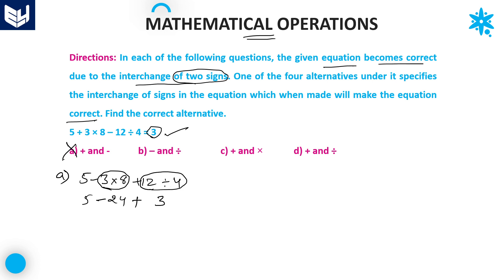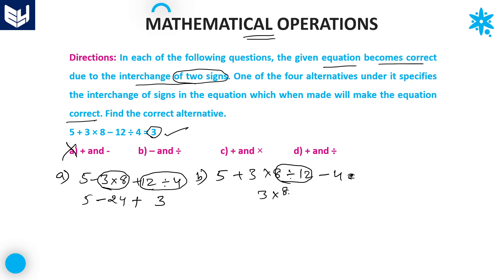Next, let's check option B. Here minus and division are interchanged, so the equation becomes: 5 + 3 × 8 ÷ 12 - 4. First priority is division: 3 × 8 ÷ 12 — that is 8/12, which simplifies. Actually, 3 into 8 is 24 divided by 12 equals 2. So this entire value is 2.